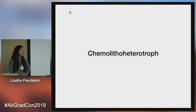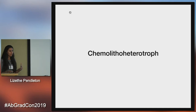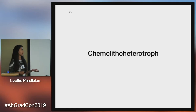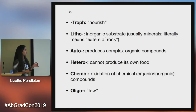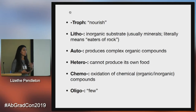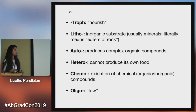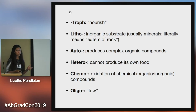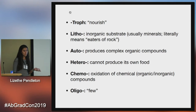There are some heavy words within the microbiology field, like chemolithoheterotroph. Sounds like a mouthful, but it can give you a lot of information about the organism, where it lives, and what it does. A quick breakdown: 'troph' means nourish; 'litho' literally means eater of rock; 'auto' means self or self-producing — an organism that can produce its own organic compounds; 'hetero' cannot produce its own food; 'chemo' is the oxidation of chemical compounds, whether organic or inorganic; and 'oligo' means few. Organisms that live in low-nutrient environments would be classified as oligotrophs.